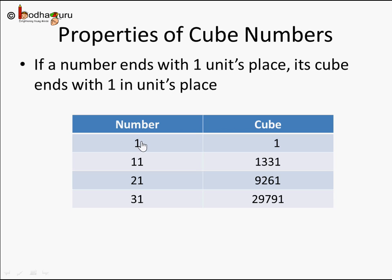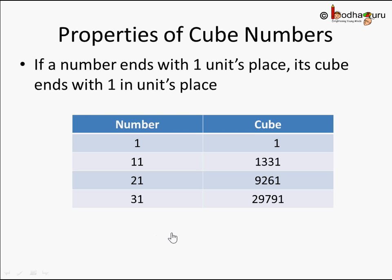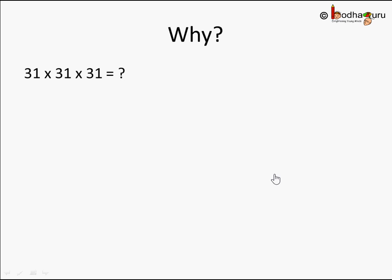Another property: if a number ends with 1 in its units place — like 1, 11, 21, 31 — then its cube also ends with 1 in the units place. For example, 31³ = 31 × 31 × 31 = 29,791. Even a large number like 151, when cubed (151 × 151 × 151), will still end with 1. This is because the cube is just the same number multiplied three times.